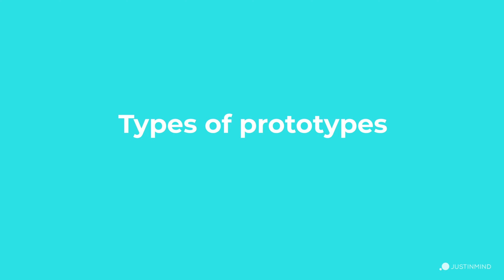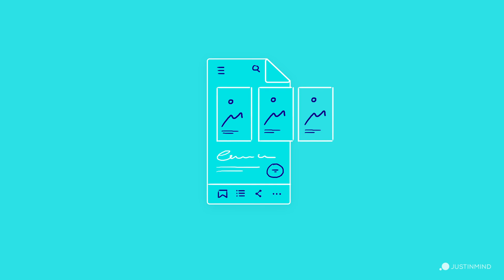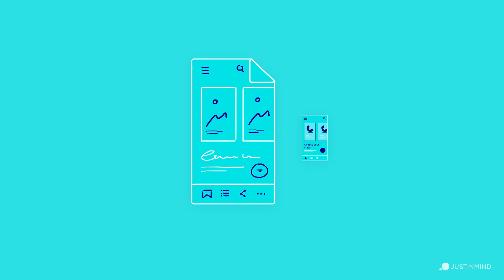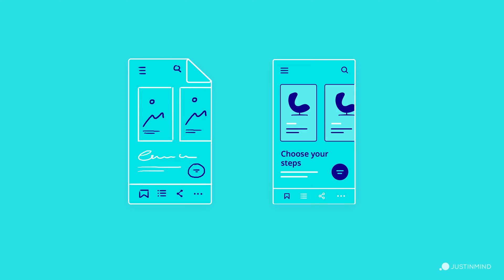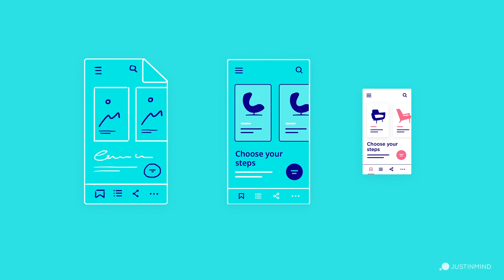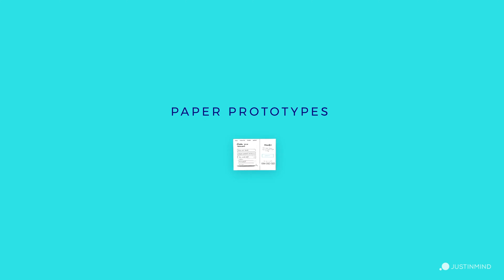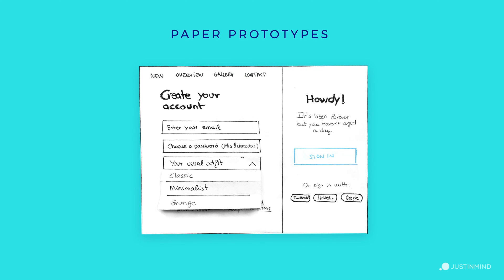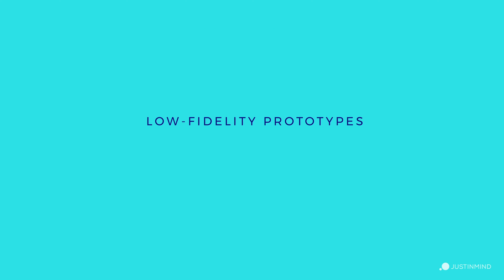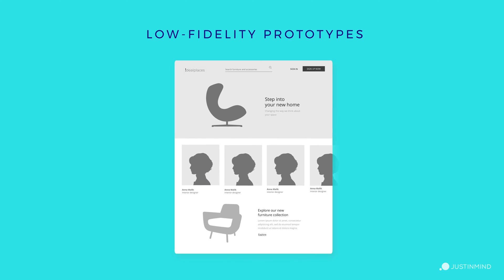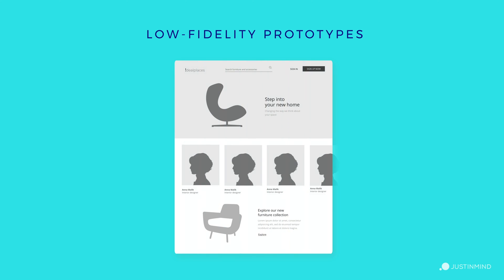Types of prototypes. There are different types of prototypes according to the degree of fidelity you want to capture. The degree of fidelity refers to how closely a prototype represents the final product. First, paper prototypes — these are sketches of a product's screens and they are the most basic prototype. Second, low-fidelity prototypes — these focus only on fundamental aspects like basic screen layout, element spacing, and positioning.